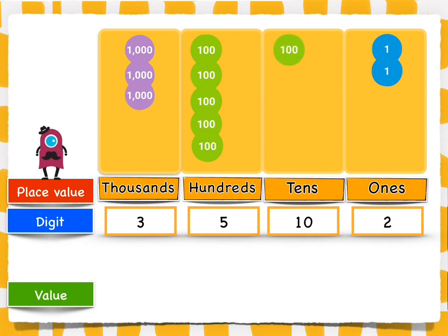Ten tens make one hundred. Since I have a hundred, I am going to regroup it and put it in the hundreds place. Now, let's rename and change ten tens into zero tens and the hundreds into six hundreds.